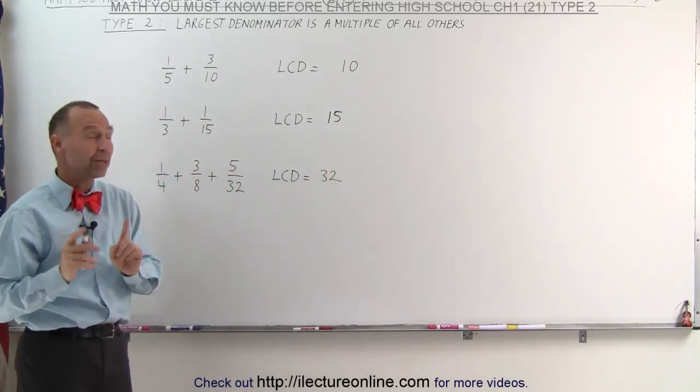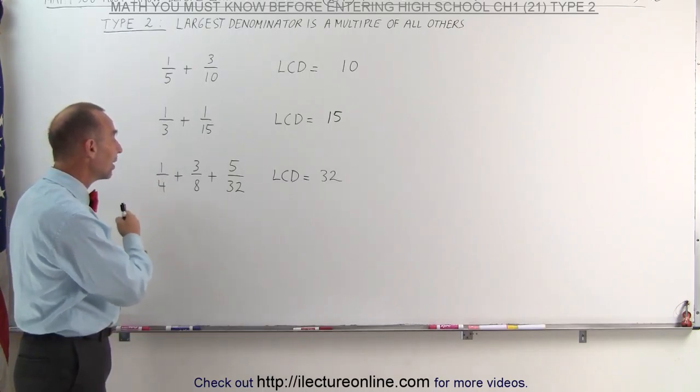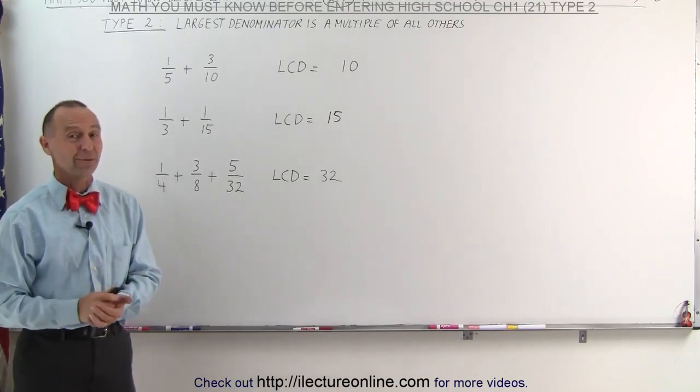But again, you need to be careful. Look at all the denominators. If the largest one is a multiple of all the other denominators, that simply becomes the lowest common denominator. And that's how it's done.